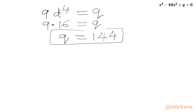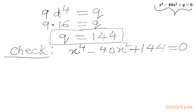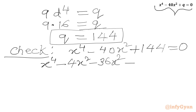Our required answer is q = 144. Let us verify by substituting q = 144 into the original equation: x⁴ − 40x² + 144 = 0. Using factorization, we split −40x² as −4x² − 36x², giving x⁴ − 4x² − 36x² + 144 = 0.